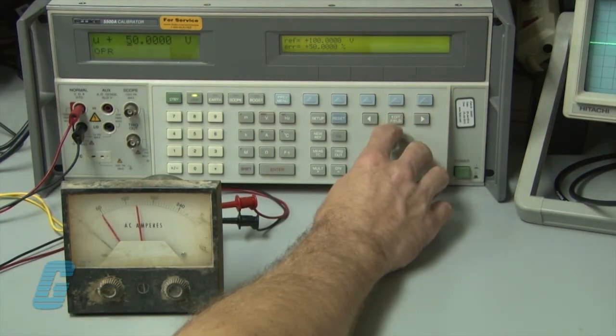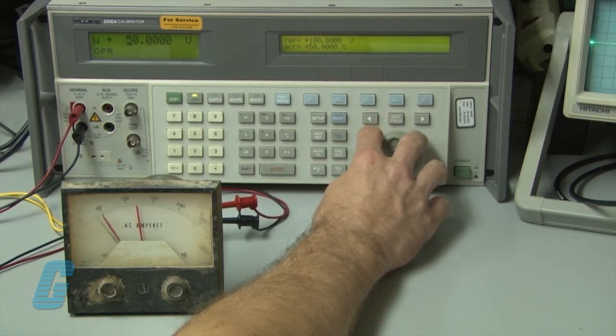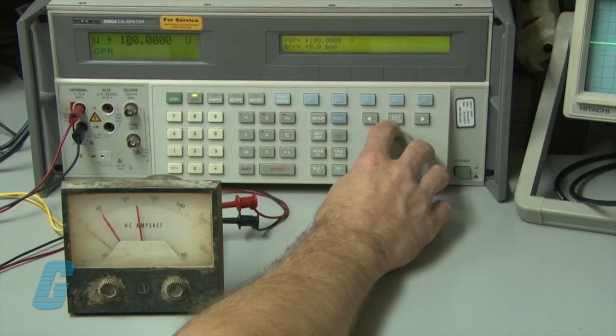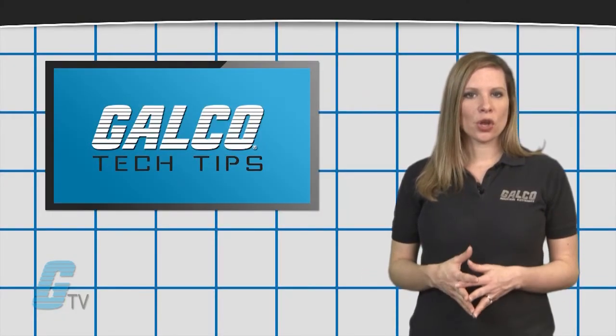Electronic components may slowly lose their accuracy through a combination of factors, including age, use, environment and more. This is a phenomenon known as drift.